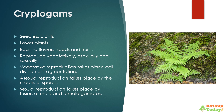Moving on to cryptogames. Cryptogames are seedless, lower plants that bear no flowers, seeds, and fruits. These reproduce by vegetative, asexual, and sexual means. Vegetative reproduction takes place as cell division or fragmentation. Asexual reproduction takes place by the means of spores.